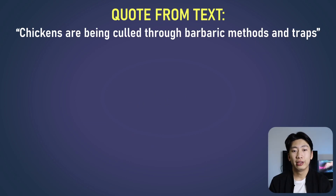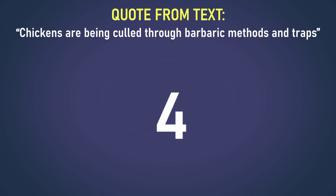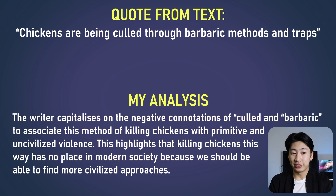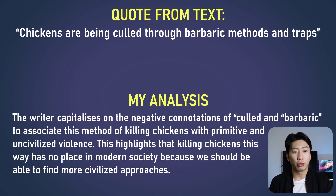Let's look at another example: 'Chickens are being culled through barbaric methods and traps.' See if you can identify the words and their hidden meanings in this sentence. Here's what I would say: 'The writer capitalizes on the negative connotations of culled and barbaric to associate this method of killing chickens with primitive and uncivilized violence. This highlights that killing chickens this way has no place in modern society because we should be able to find more civilized approaches.' The words 'culled' and 'barbaric' make us think of old-fashioned, worn-out ways of doing things — compared to modern, civilized society, we should reject this sort of caveman method.